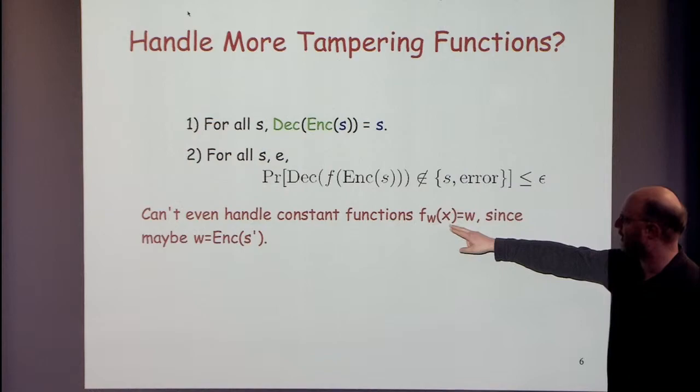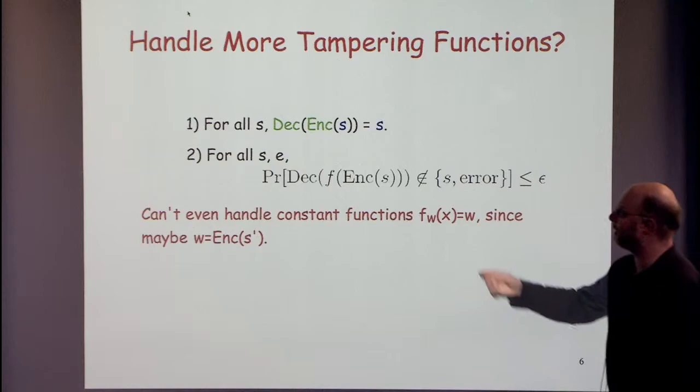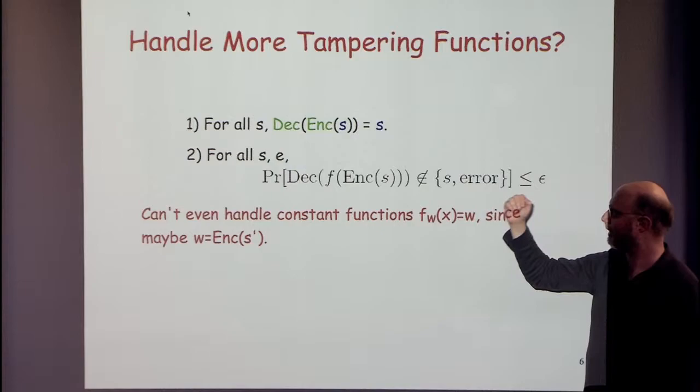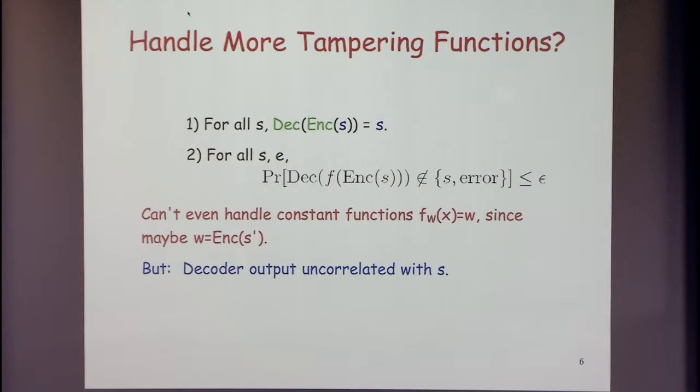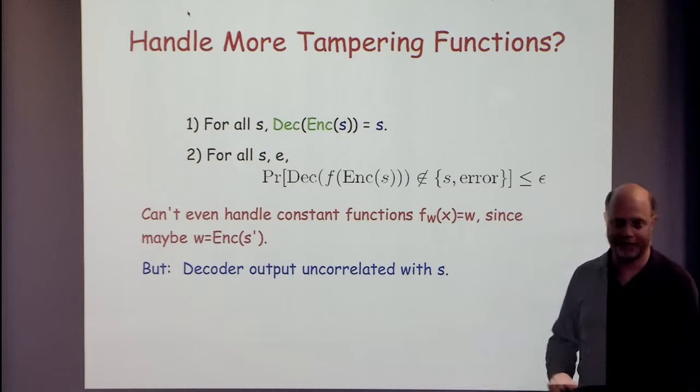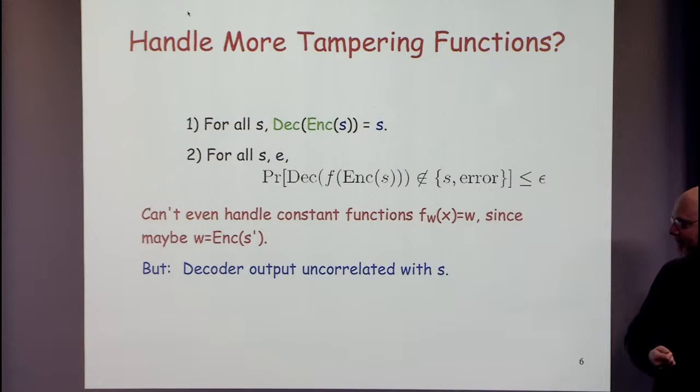But here we can't even handle constant functions. If we have a function f that always outputs the string w, and w is the encoding of some string s', then the decoder must output s' — but then it violates the second condition if some other message s is sent. So we can't hope to achieve this. The saving grace is that at least the decoder output is uncorrelated with the original string s — in our example, we're always outputting s', which is not correlated with s.